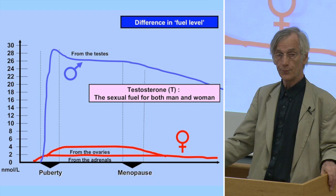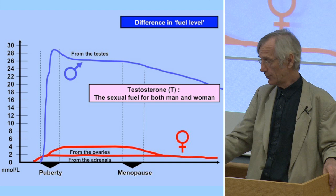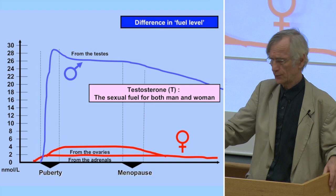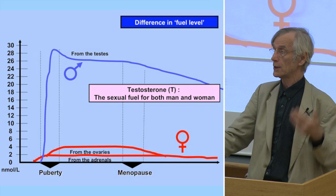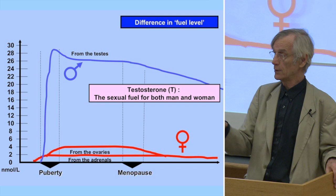In women, testosterone starts quite early — even before girls enter puberty — which is why some girls already start masturbating at age eight or nine. After menopause, the ovaries continue a little bit to produce testosterone, so it does not drop as fast as estrogens. That means even at age 80, a woman still has sufficient testosterone to have sexual desire.